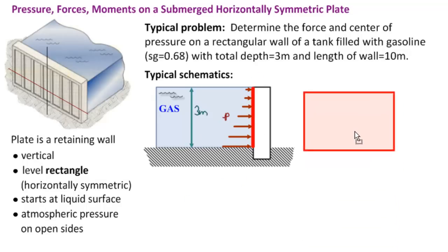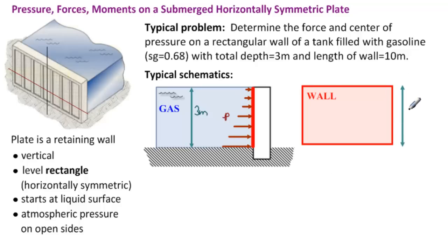Another typical schematic is just to draw the wall itself. So this would be the wall. Now we cannot see the gas. Of course we cannot draw these pressure lines, but we can see both the depth and the length of the wall. And you can put in L equals 3 meters here and W equals 10 meters here.